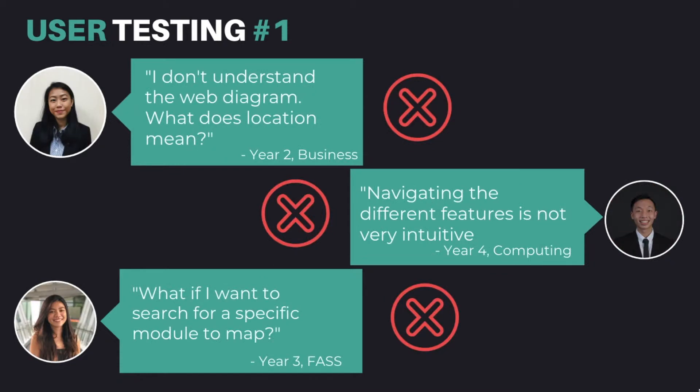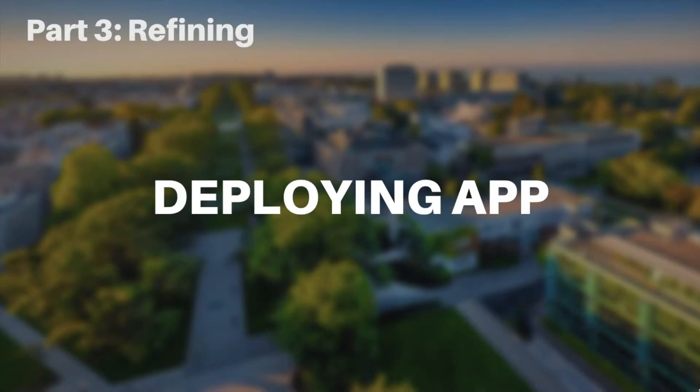However, some users found some features confusing and suggested we included tool tips to make the app more intuitive. Other users also wanted to see more features that allowed them to search for specific modules that they want to map. Thus, a new feature was added, allowing students to search for a module to see what universities it can be mapped to. With our user feedback, we were able to prioritise the features we needed to build our application.